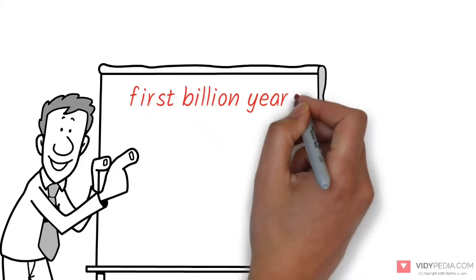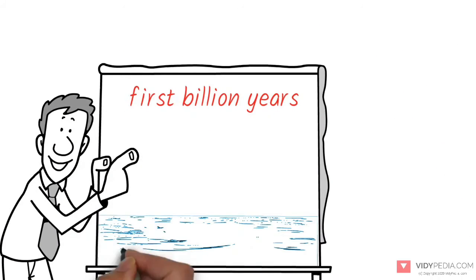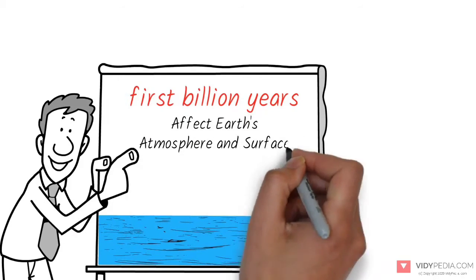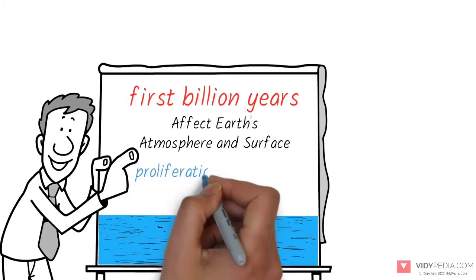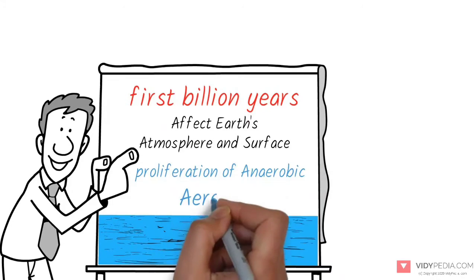Within the first billion years of Earth's history, life appeared in the oceans. It began to affect Earth's atmosphere and surface, leading to the proliferation of anaerobic, and later aerobic, organisms.